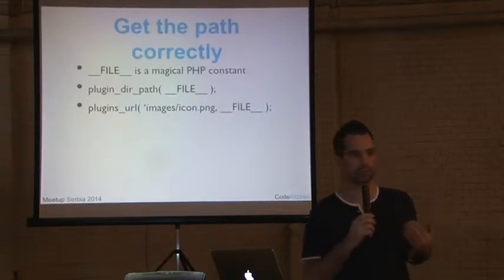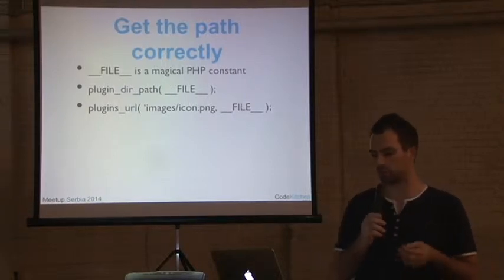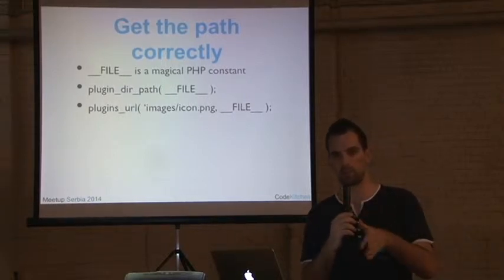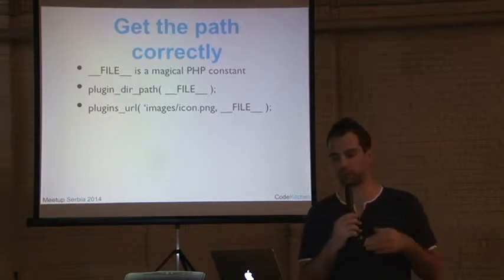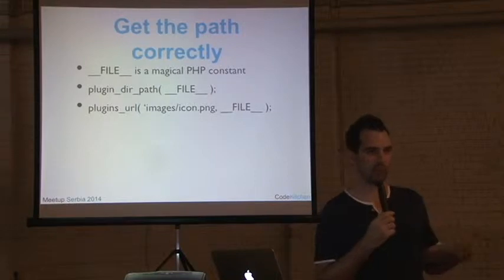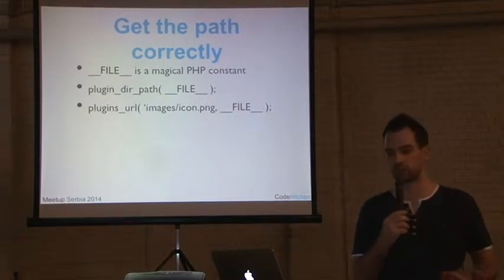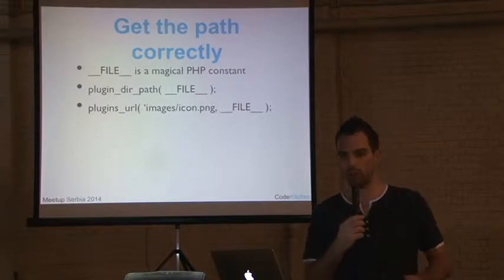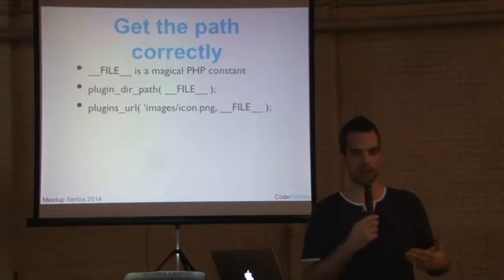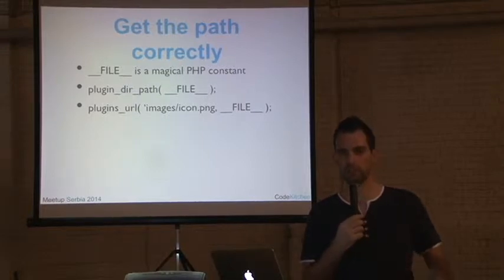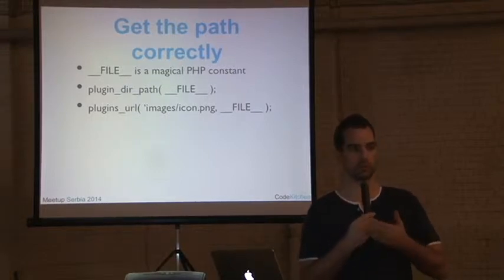Also use WordPress functions for URLs. Don't hardcode the plugin URL with your plugin name — use the plugins_url() function instead. The same applies for themes. This way, if I change the plugin directory or move it to a must-use plugins directory, it still works. If I use SSL, it still works. I won't get mixed content issues because I'm using WordPress functions.